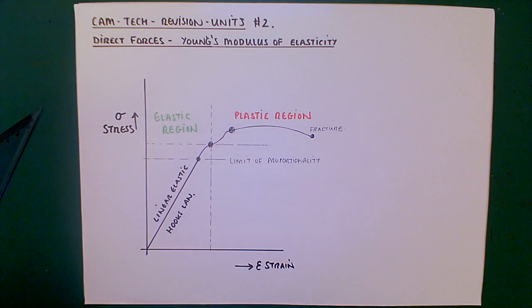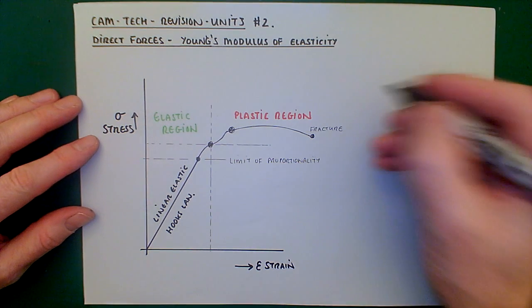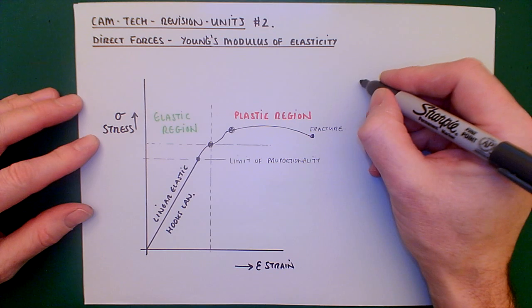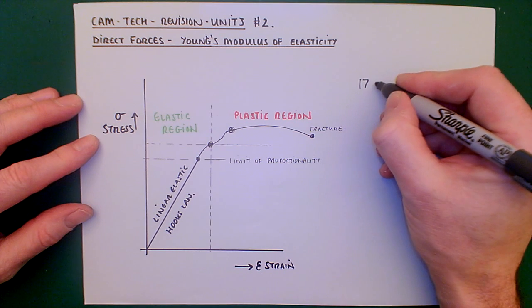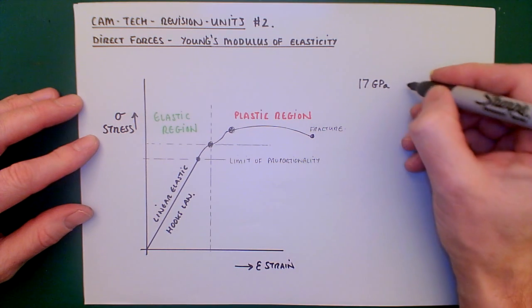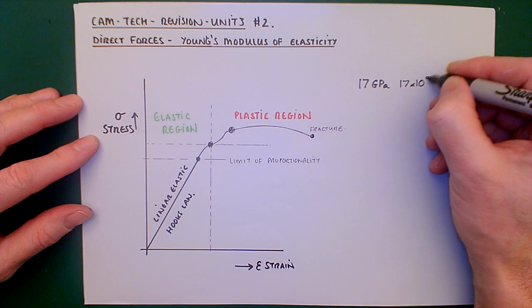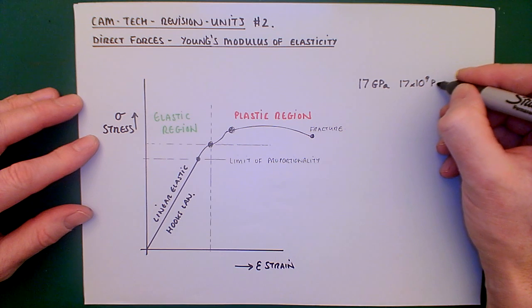Now, you wouldn't be expected to carry out calculations for each of your materials. These are usually sort of given or you could be looked up and examined on a table. For example, something like concrete would have a value of 17 gigapascals. That's effectively 17 times 10 to the 9 pascals.